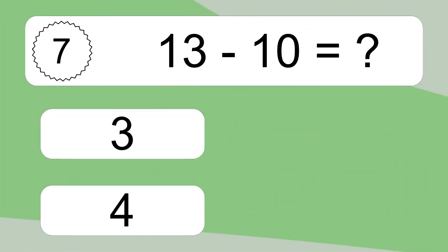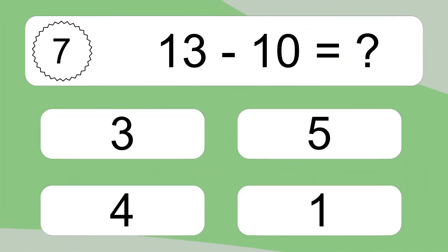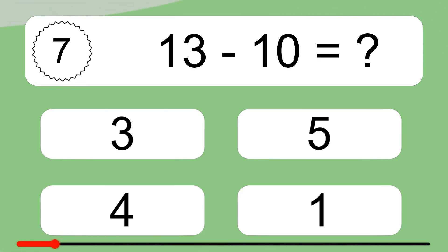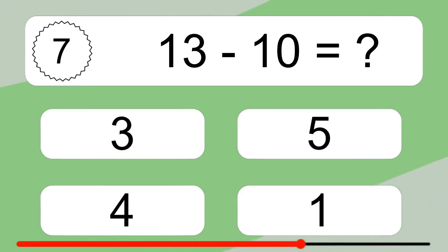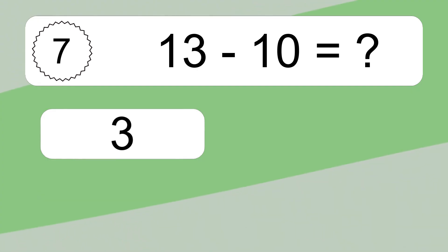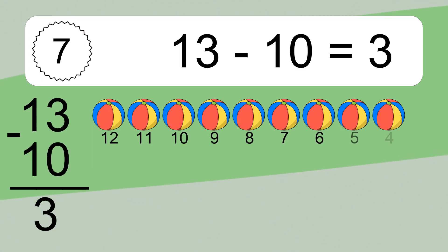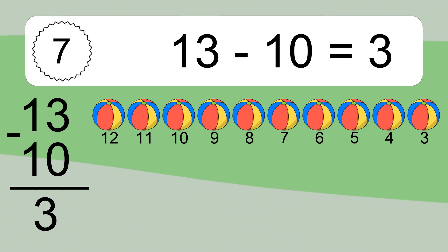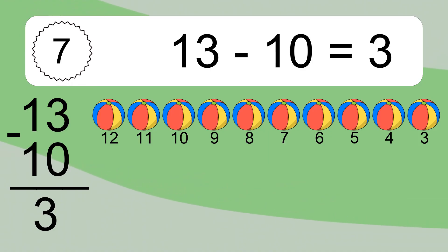13 minus 10 equals what? 13 minus 10 equals 3. Let's count it: 12, 11, 10, 9, 8, 7, 6, 5, 4, 3.